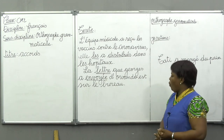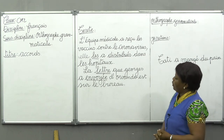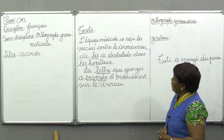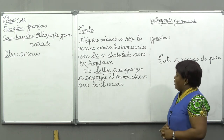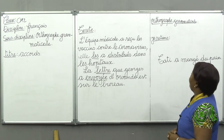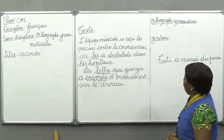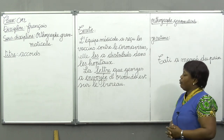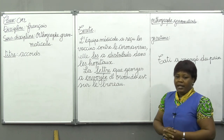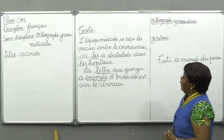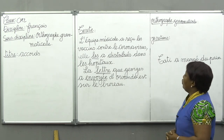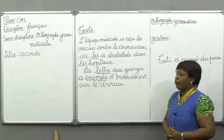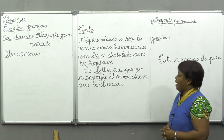Georges a envoyé quoi ? Georges a envoyé la lettre. Nous allons lire le texte : L'équipe médicale a reçu les vaccins contre le coronavirus. Elle les a distribués dans les hôpitaux. La lettre que Georges a envoyée de Wando est sur le bureau.